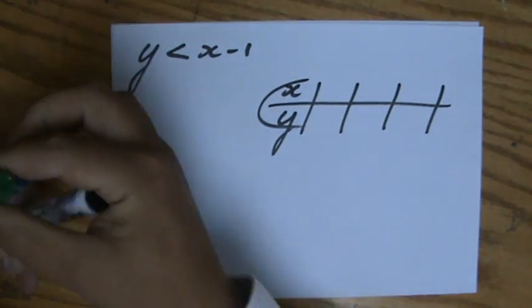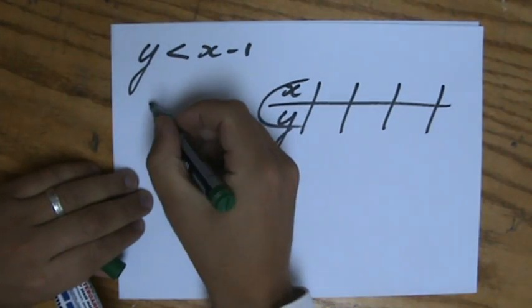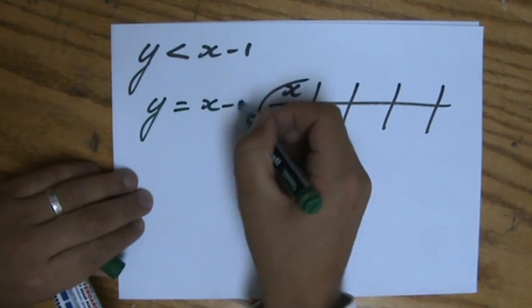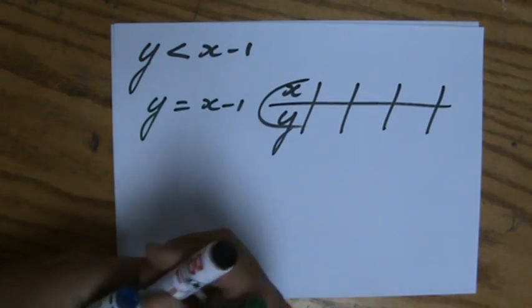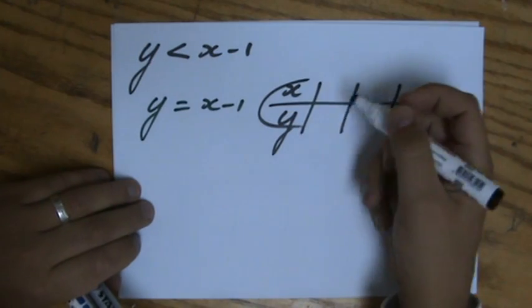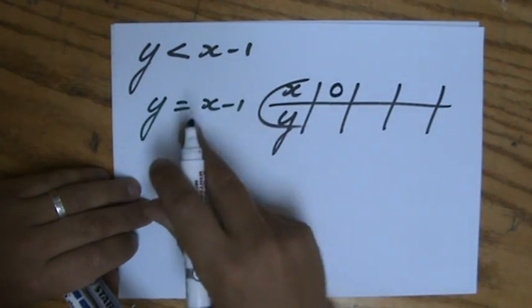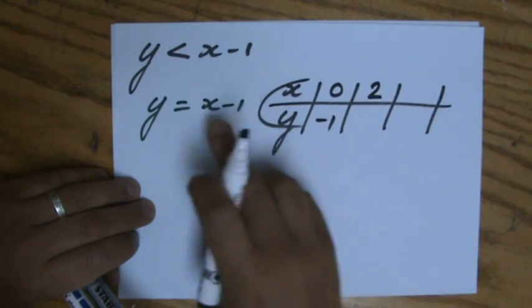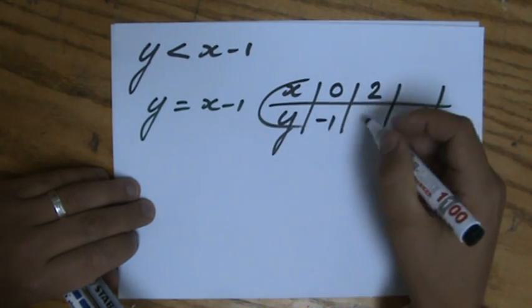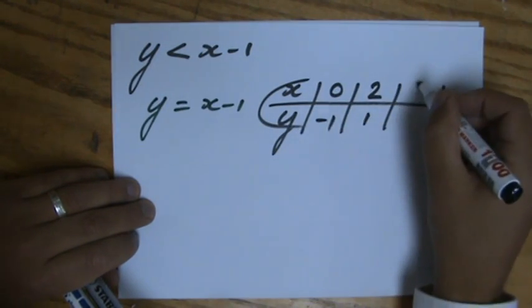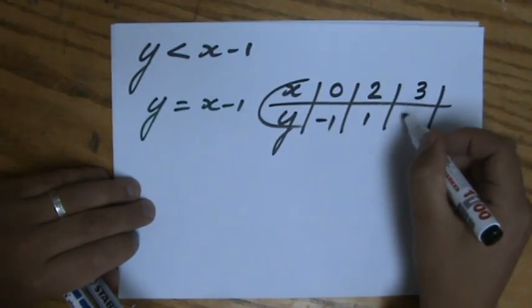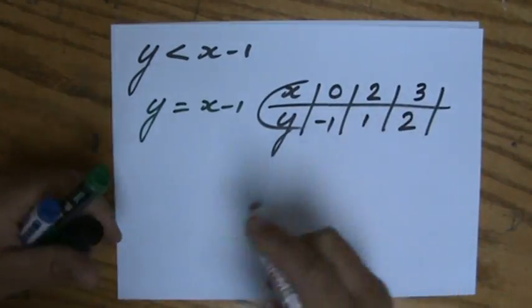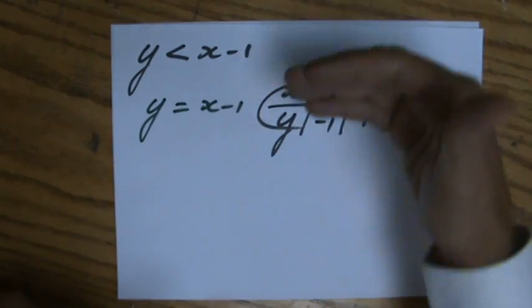Let's just write down the equation y equals x minus 1, okay? So this is the same as you've done so far. When x is 0, y is minus 1. When x is 2, 2 minus 1, y is 1. And when x is 3, 3 minus 1 is 2. So I chose three values for x and found the y values — I've got my three coordinates.